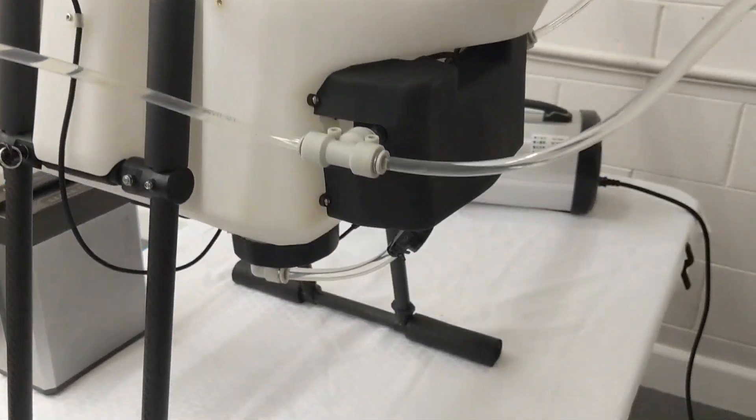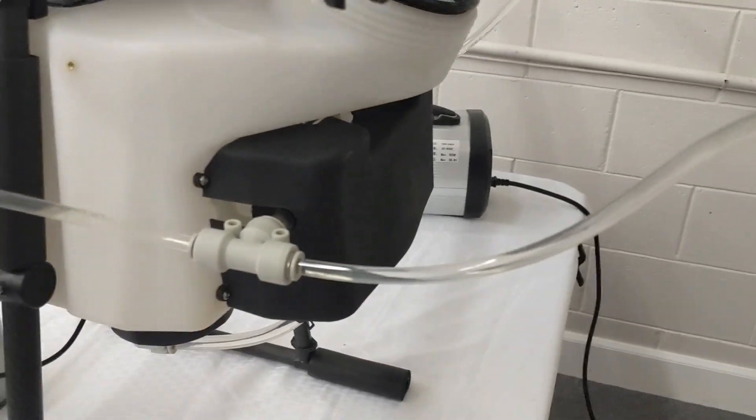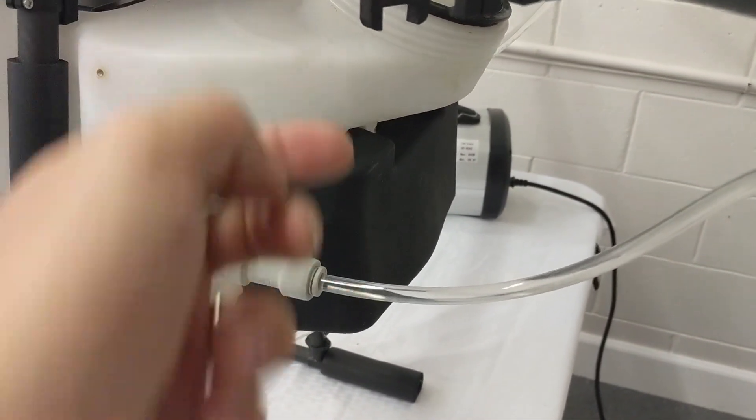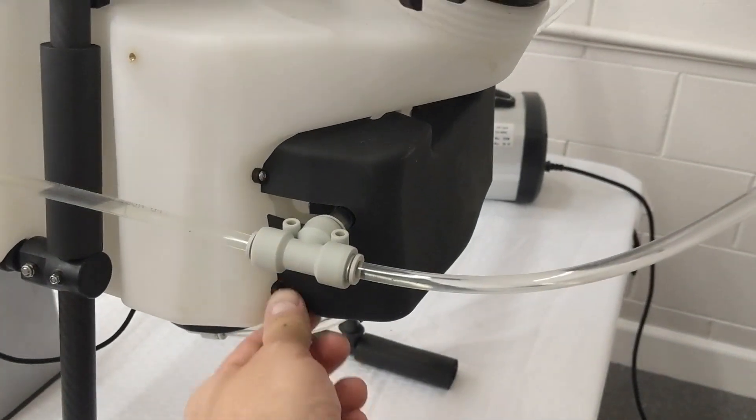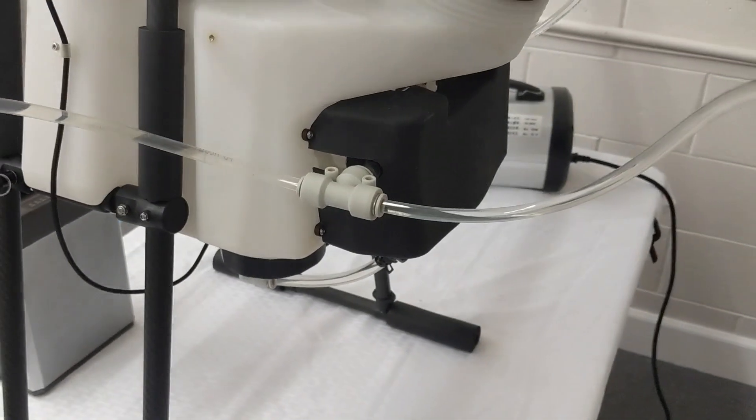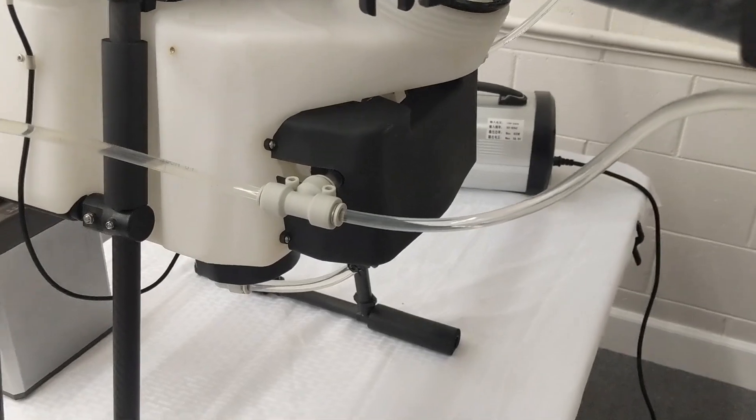The pumps are actually hidden behind this piece of rubber here. This is designed to prevent the pumps from getting dirty, preventing it from getting chemicals spilled on it. It's easily removable for service, but there's actually two brushless pumps on this model. So you have a very high output options with these pumps.